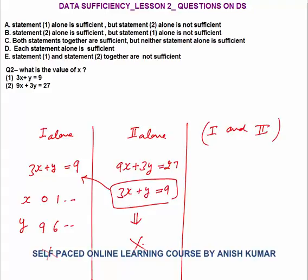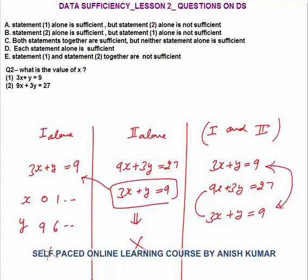Now we combine, because both statements individually are not sufficient. Combining: 3x + y = 9 and 9x + 3y = 27. Dividing the second by 3 gives 3x + y = 9 — both statements give the same equation. We still have a single equation with two unknowns, so we cannot find a unique value of x. There will be multiple values of x. So even statements 1 and 2 combined are not sufficient to answer the question. Answer choice: E.